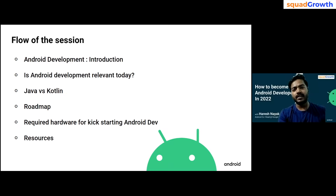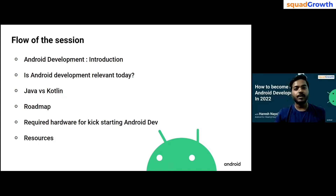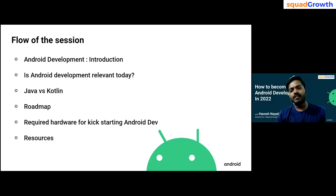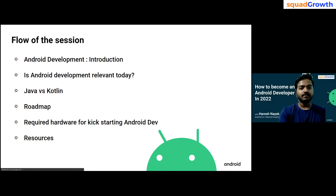The flow of the session would be: first, we'll talk about what Android development is and have some introduction. Then we'll look at whether Android development is relevant today, since Android started a decade earlier in around 2009. Then we'll discuss whether you should go with Java or Kotlin — the two major languages for Android development. Then we'll look at a roadmap, the required hardware for Android Studio, and finally the resources you need to study Android development.